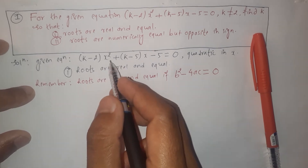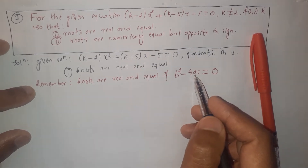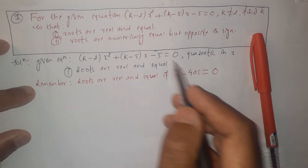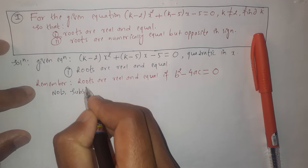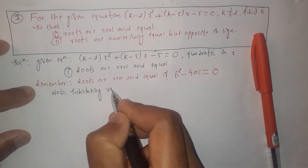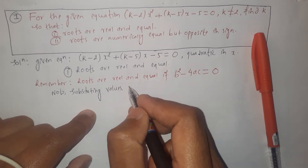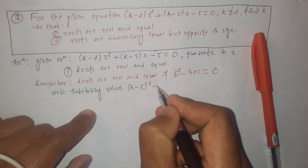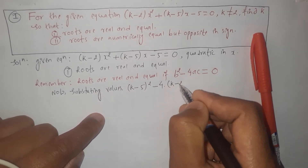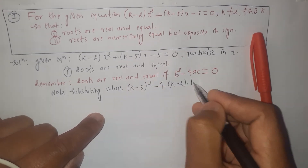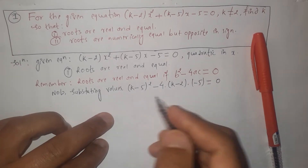Now, for this given equation, the value of b is the coefficient of x, the value of a is the coefficient of x squared, and c is the constant term. Substituting the values: the coefficient of x is k minus 5, the coefficient of x squared is k minus 2, and the constant term is minus 5.